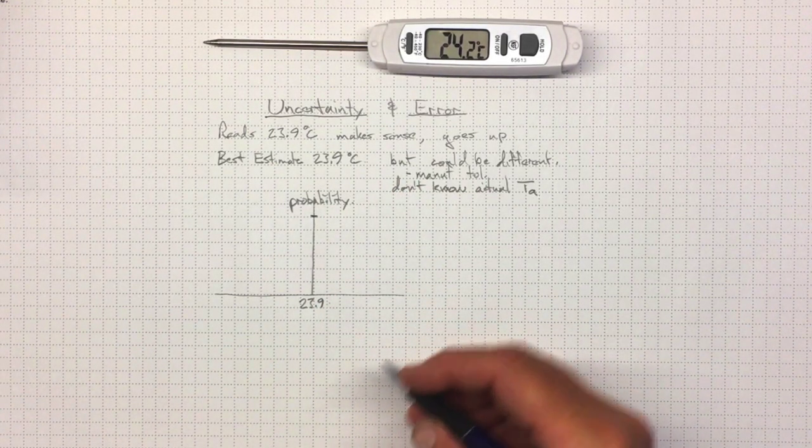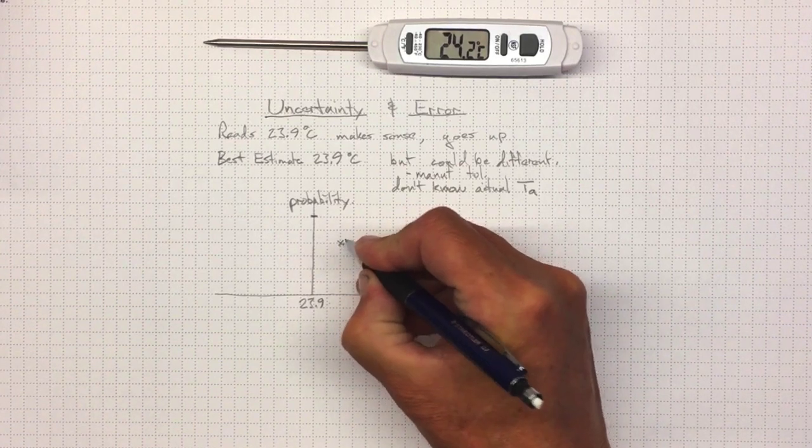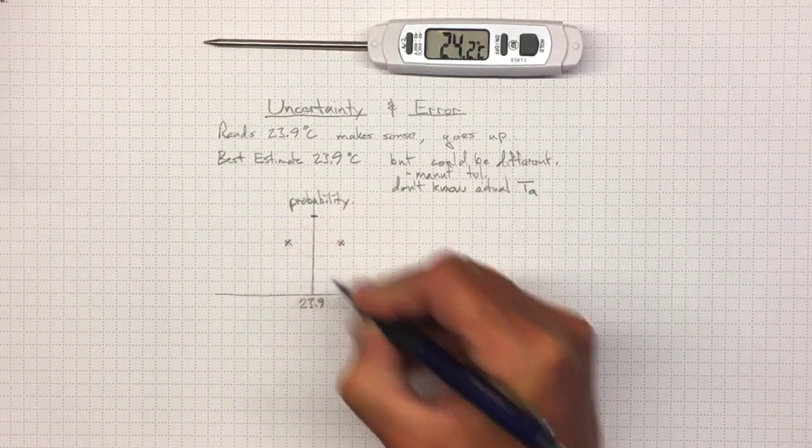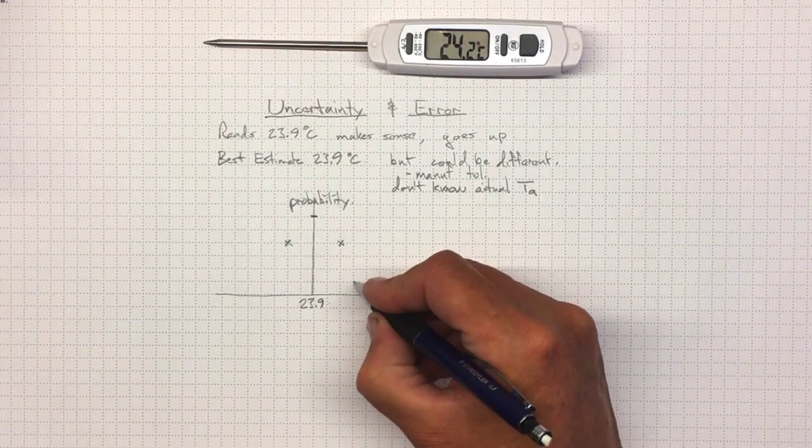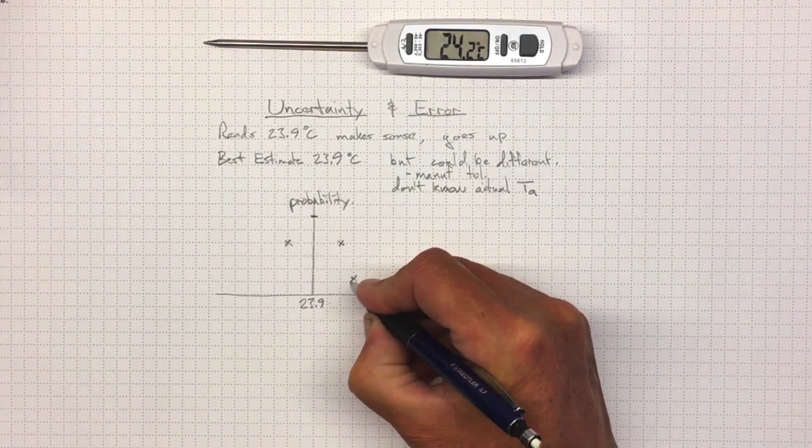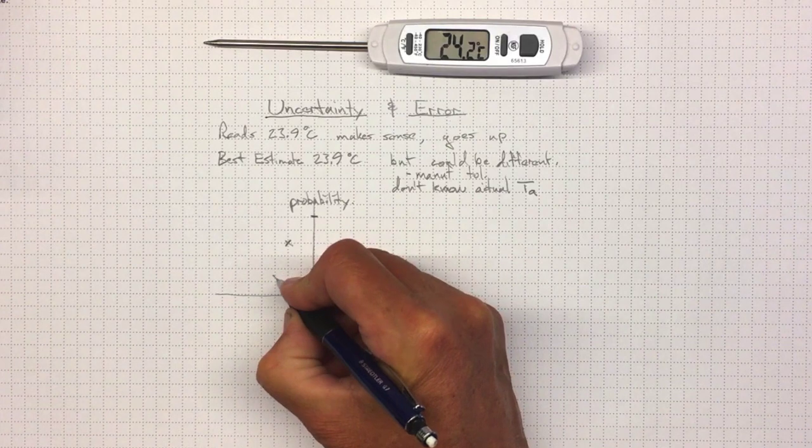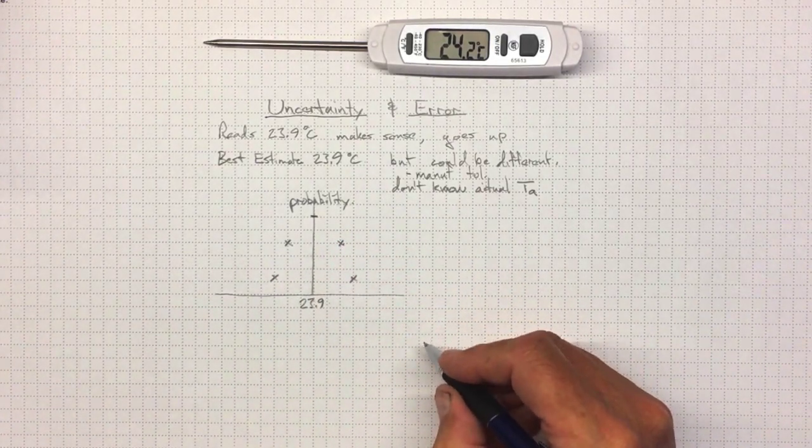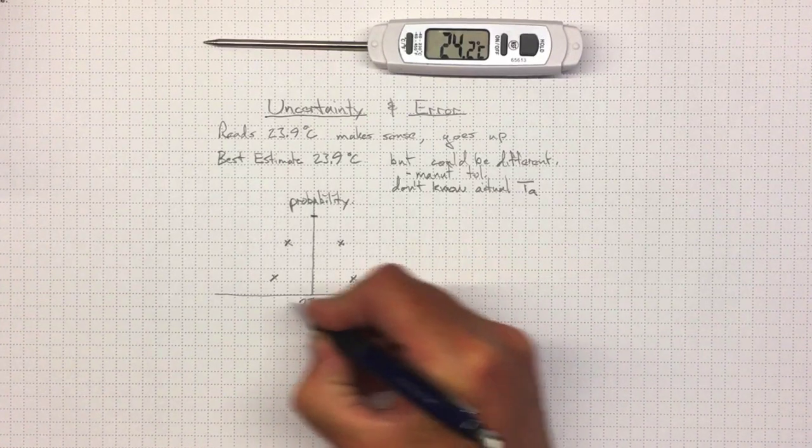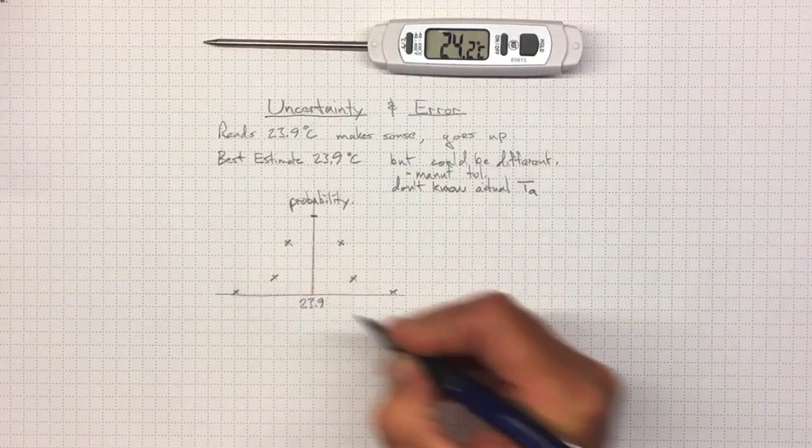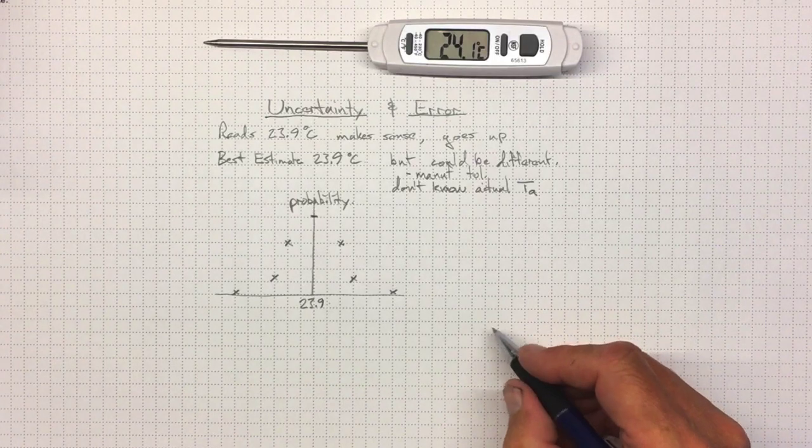So let's say the probability level around 23.9 is there. Now, as we get a little further away, the probability level might be lower. And if we get still further away, the probability level might be even lower. And finally, as we get really far away, the probability level is down to either zero or almost zero.